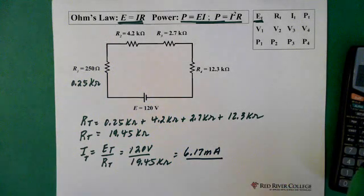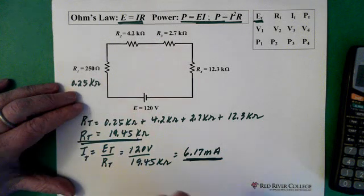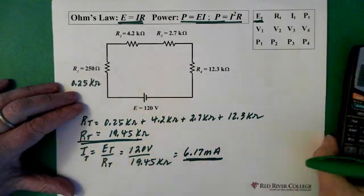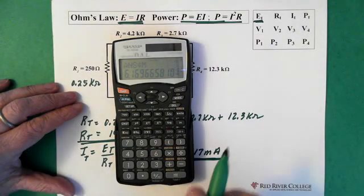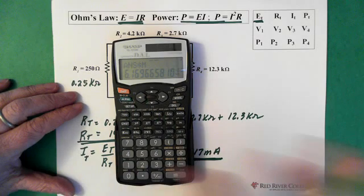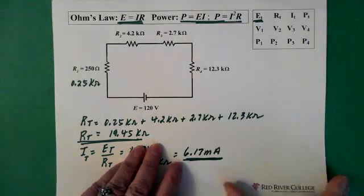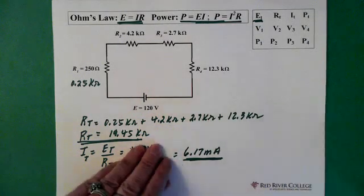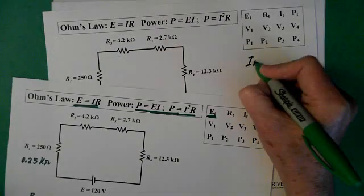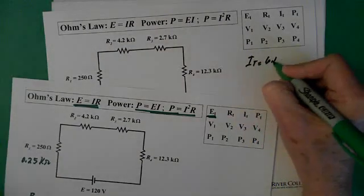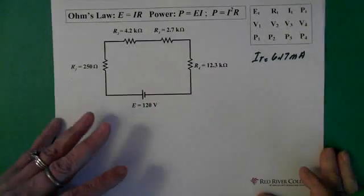Now once you've solved for total resistance and current, it's a really good idea to save it in your calculator. So we're going to store the current in memory because we'll be using it a lot. So we've solved for resistance and solved for current. I total, 6.17 milliamps.